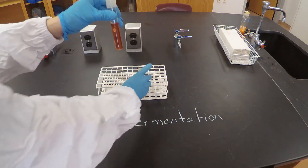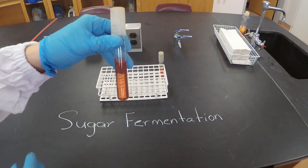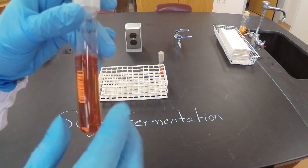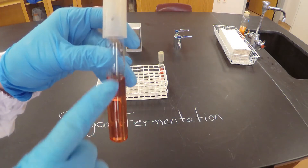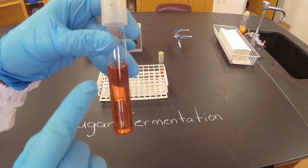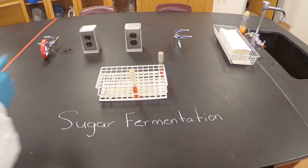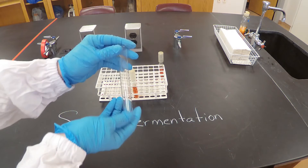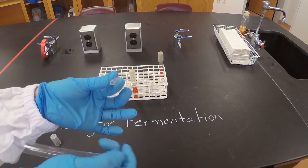Let's start with the liquid one. If you're using the liquid, what you're going to do is use a small tube — I don't know if you can see there is a small tube inside the big tube. The small tube is called the Durham tube, and I'm going to show it. This is the Durham tube.